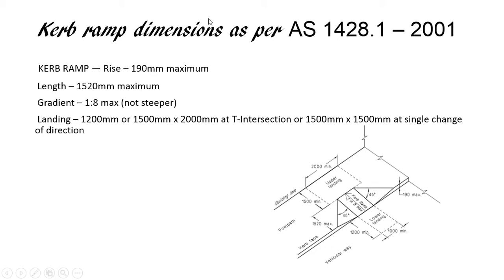These are the dimensions of the kerb ramp as per AS1428. The kerb ramp rise must be a maximum of 190mm. The length is defined as a maximum of 1520mm. The gradient from landing to the top is one in eight percent maximum, and from the lower landing it rises up at 45 degrees. The dimension of the upper landing is also provided. These dimensions are as per AS1428.1.